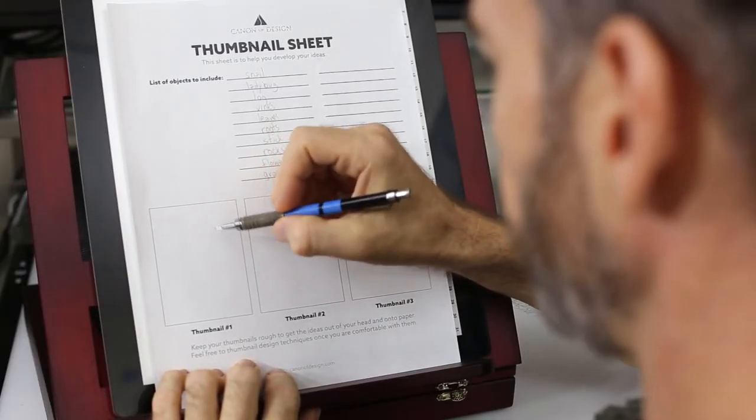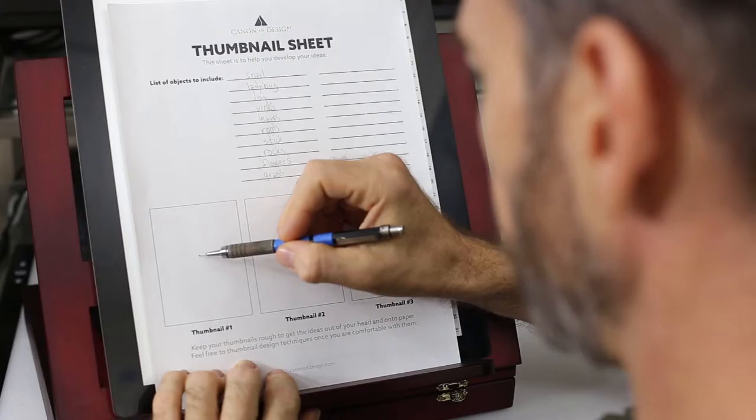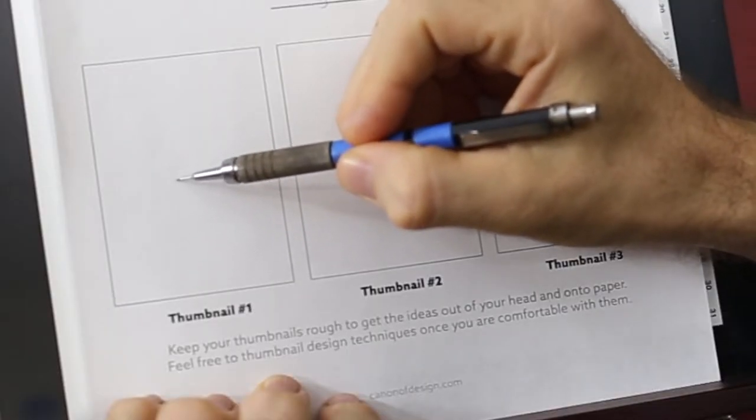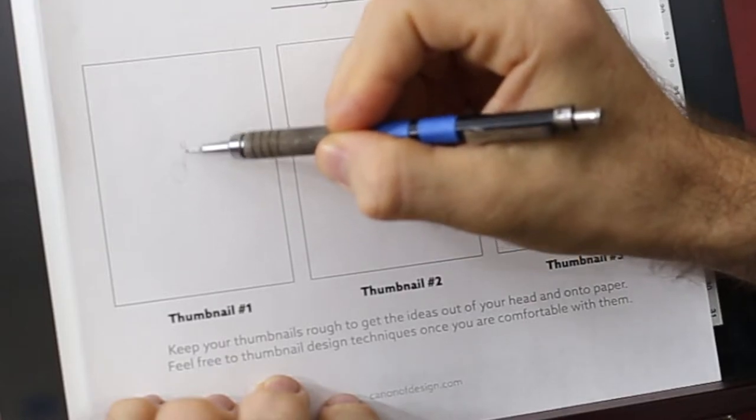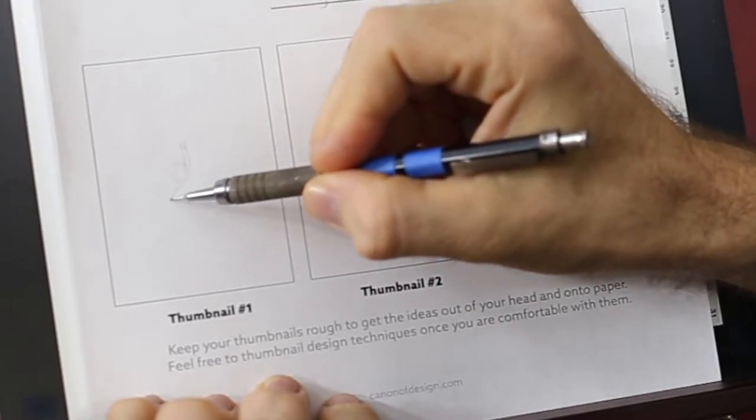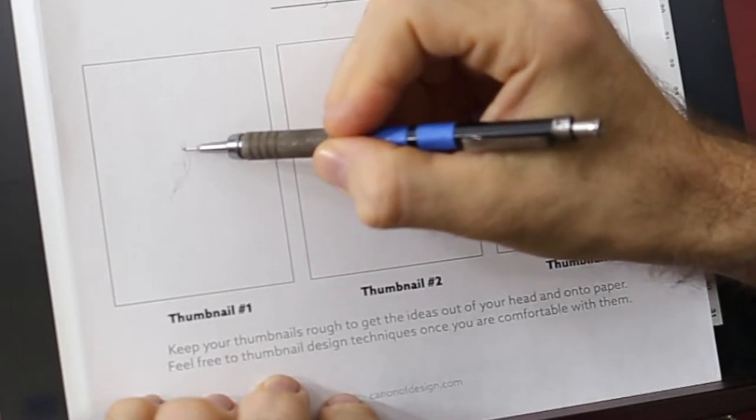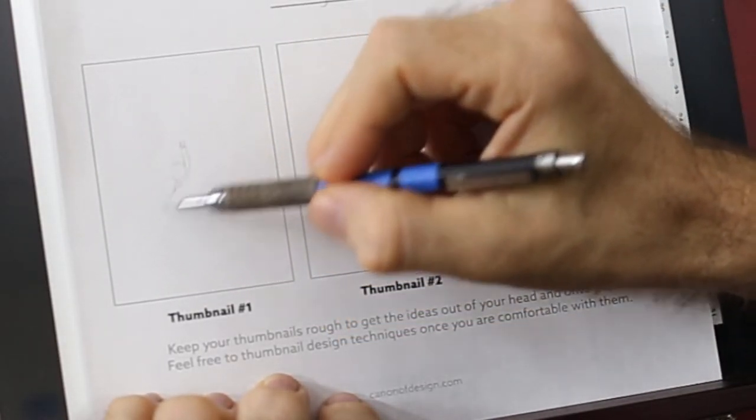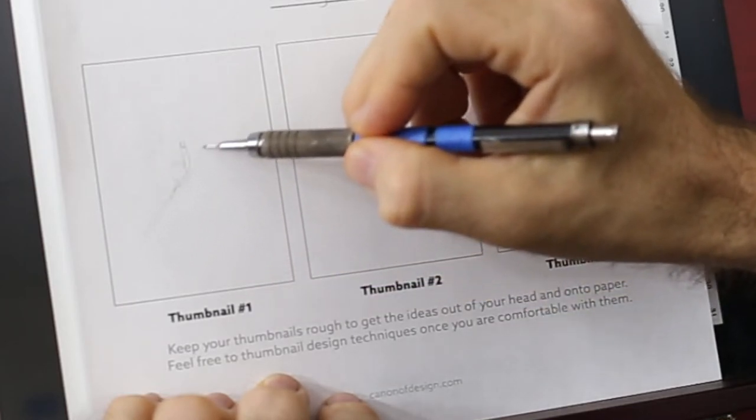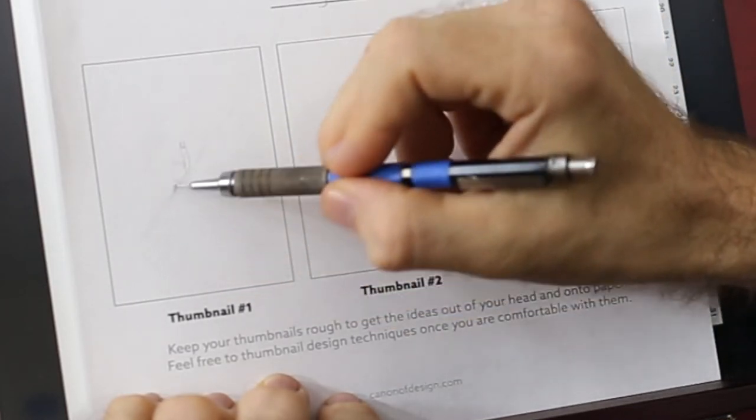For the first thumbnail, we'll just start with the snail. We're going to put it just a little bit off-center and just scribble in some ideas, keep it kind of light. Then I want to place that log because I want it on that Baroque diagonal, so we're just going to roughly kind of find the Baroque diagonal there.